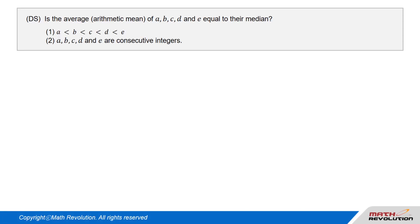Question 4, D.S. Is the average or arithmetic mean of A, B, C, D, and E equal to their median? Condition 1: A is less than B, which is less than C, which is less than D, which is less than E. Condition 2: A, B, C, D, and E are consecutive integers.